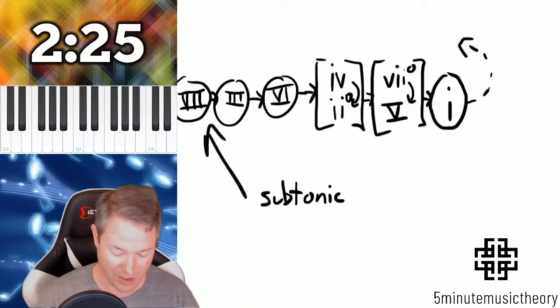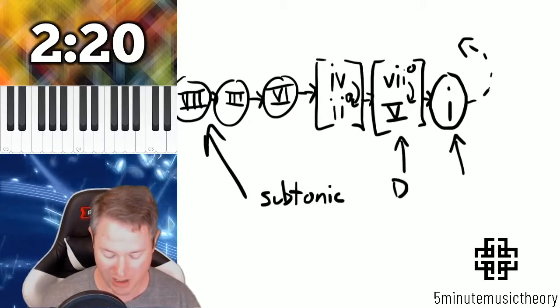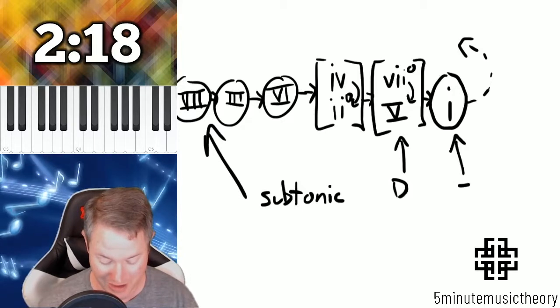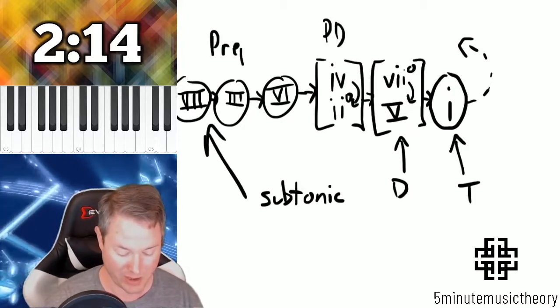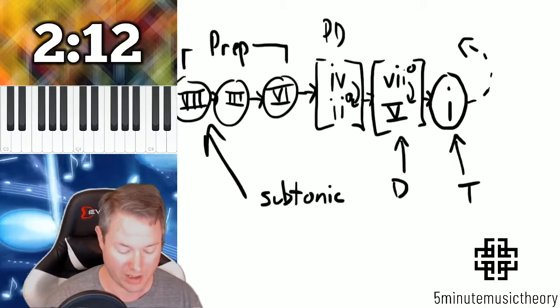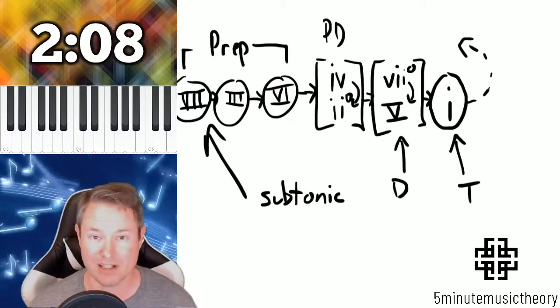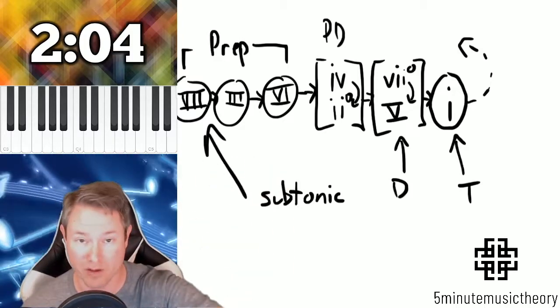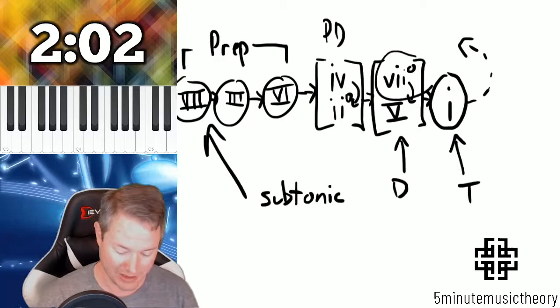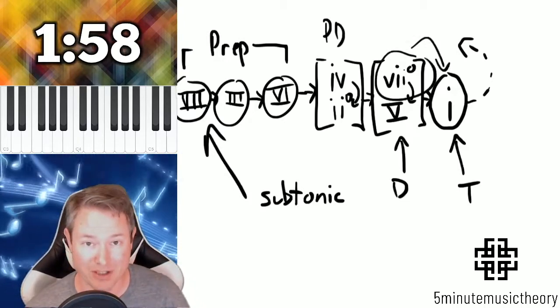The leading tone belongs to the dominant box of generic functions. Here's tonic, and then here's predominant, and then the preparatory chords over here in order of how far they are away from the tonal center. So the subtonic is considered not only a preparatory chord, it's the farthest preparatory chord from the tonal center.